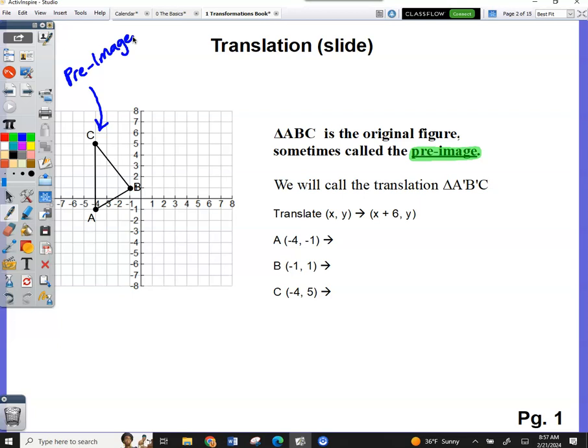After we take this preimage, and we translate it according to the way it asks me to, we can't name our new shape ABC, because then we would have two triangle ABCs on the same graph, and that would be confusing. So, after we translate it, we're going to call it triangle with these little apostrophes. Those little apostrophes, they have a vocab word. It is prime. A prime, B prime, C prime. Or what I like to say is ABC prime.